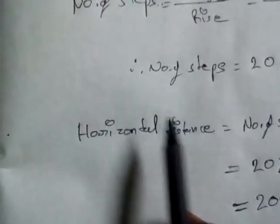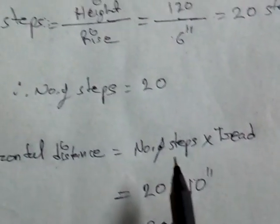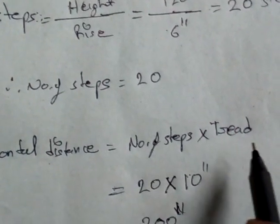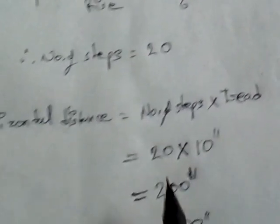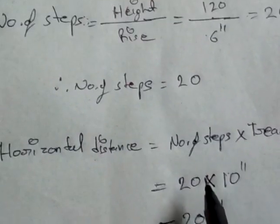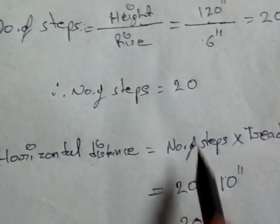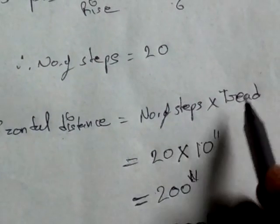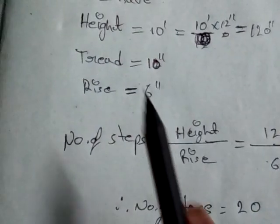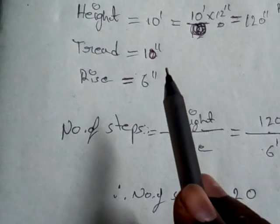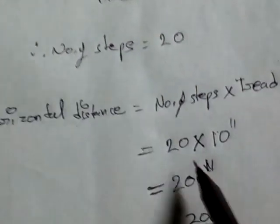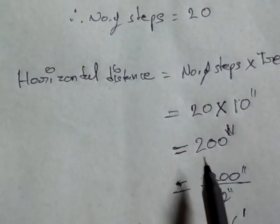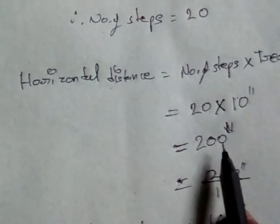Horizontal Distance is equal to Number of Steps multiplied by Thread. Number of Steps is 20, Thread is 10 inches. 20 into 10 inches equals 200 inches.